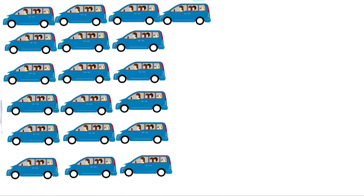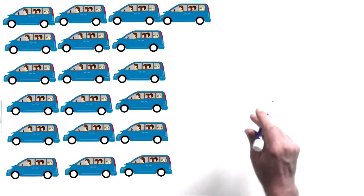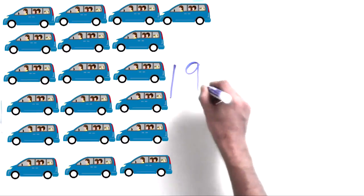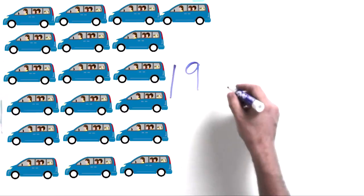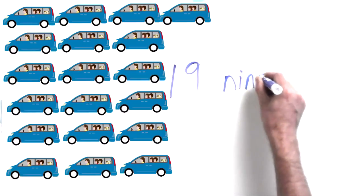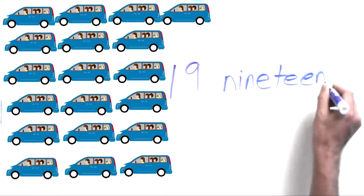19 vans. Holy cow. That's like 300 kids coming out of those, well, maybe not that many, but a lot. So here's how we write the number 19, a 1 and a 9. Easy as that. 19. And here's how we write it. We just write the word 9 and we put teen on the end. Nineteen. There we go. I'm sure you can handle that.